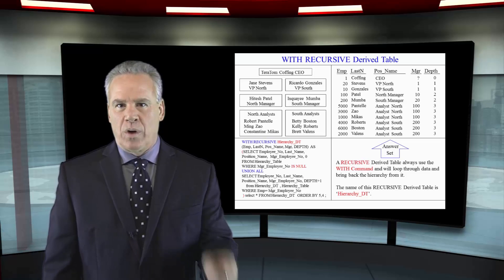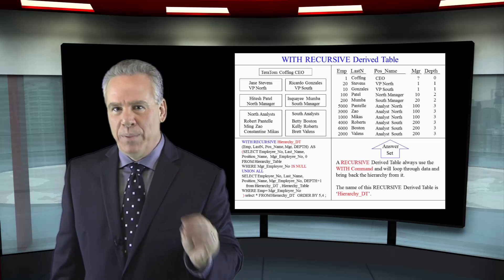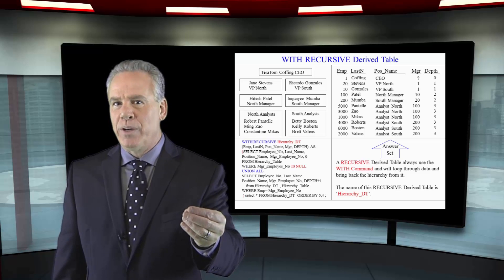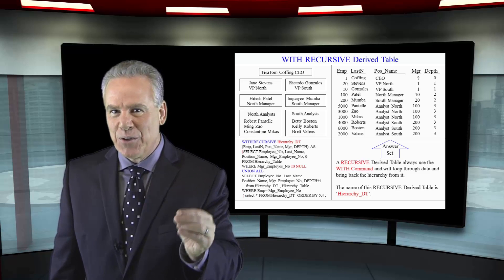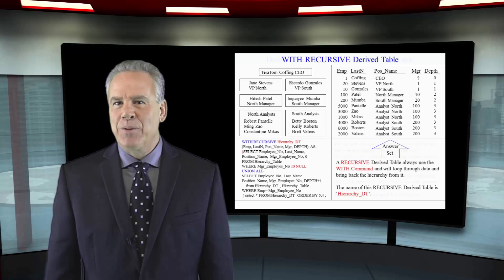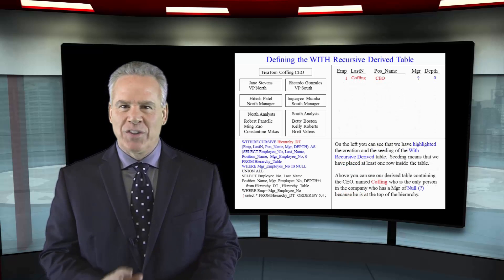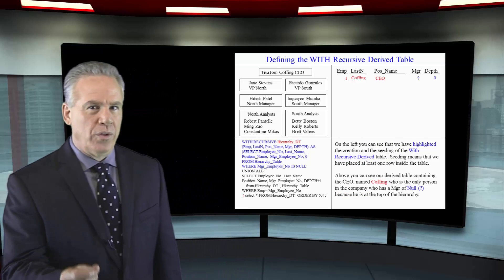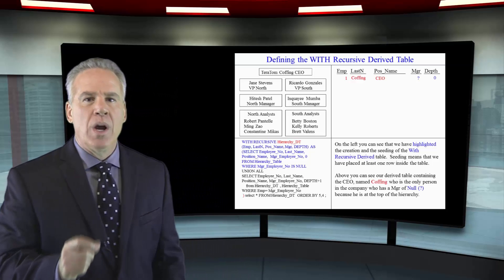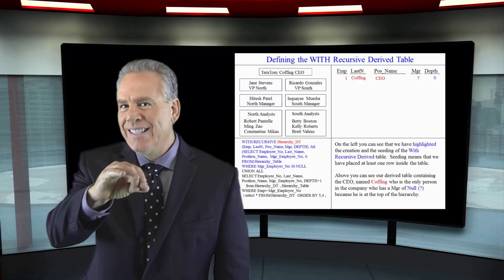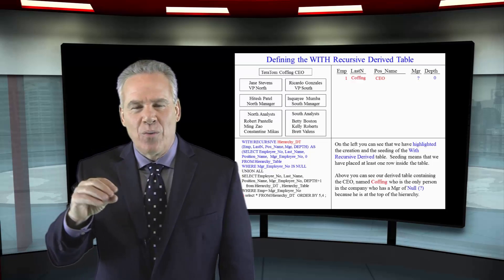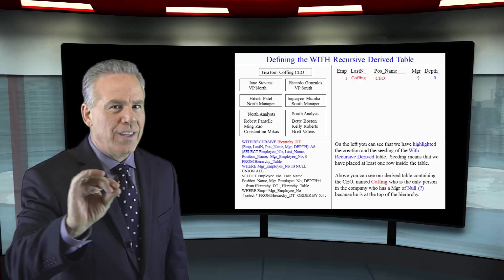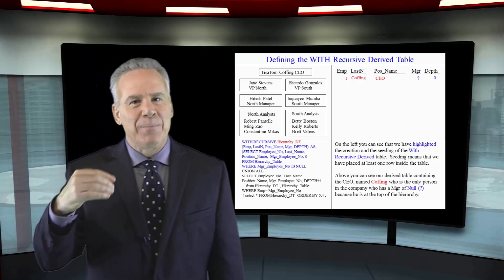Next, we're going to show you how to build the derived table that's going to be recursive. I'm going to take this in small steps. We're going to build the recursive derived table and we're going to seed the table — what that means is we're going to put at least one row in the table.